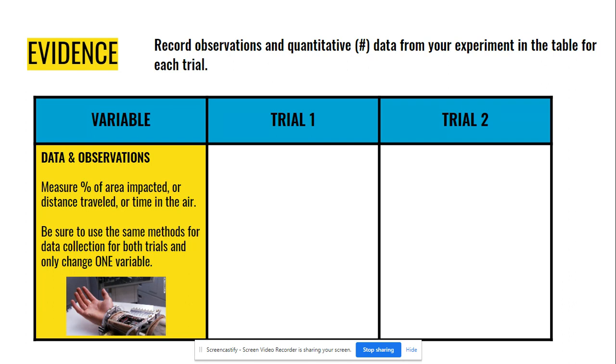So I gave some examples over in yellow. You can measure the percent of area impacted or distance traveled or time in the air. All of those you can measure fairly easily. If you're talking about distance traveled, you can use a ruler or measuring tape. Time in the air, you could just use a timer on your phone or a timer you might have at home.